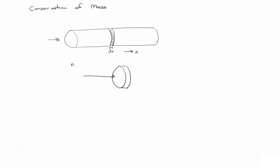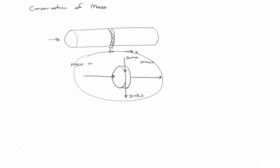You would just do an accounting on this little sliver: the mass in, the mass out, possibly some sources or sinks. You'd add these all together, accounting for the positive or negative sign convention of whether the mass was flowing in or out. And all of that must equal accumulation or storage, which typically has to do with the compressibility of the material flowing through.